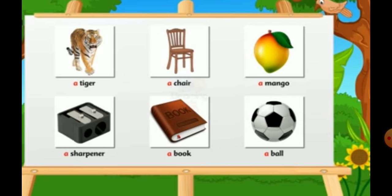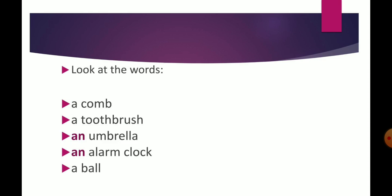The use of A or AN depends on the opening sound of the word, not on the actual letter with which it begins. In the examples shown earlier, we use AN before words that begin with a vowel sound — an umbrella, an alarm clock — and A before words with a consonant sound — a comb, a toothbrush, a ball.